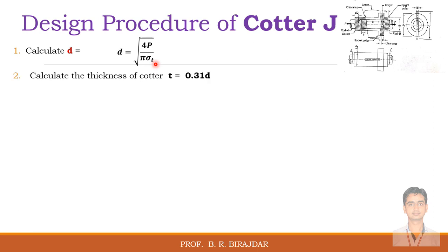Second, calculate the thickness of the cotter, t. This we will calculate from the empirical relation. So thickness t is equal to 0.31 times the diameter of the rod which we calculated earlier.